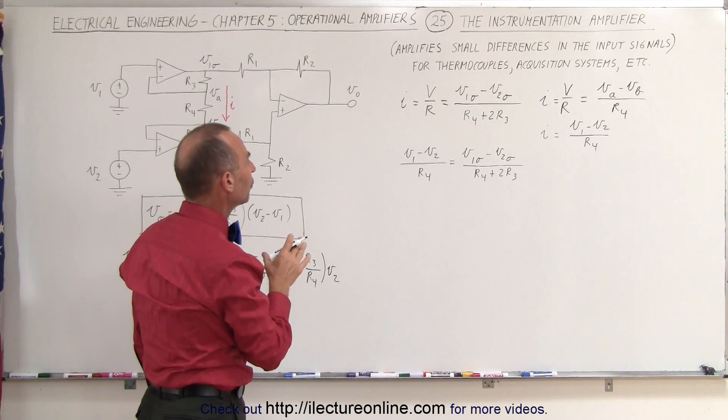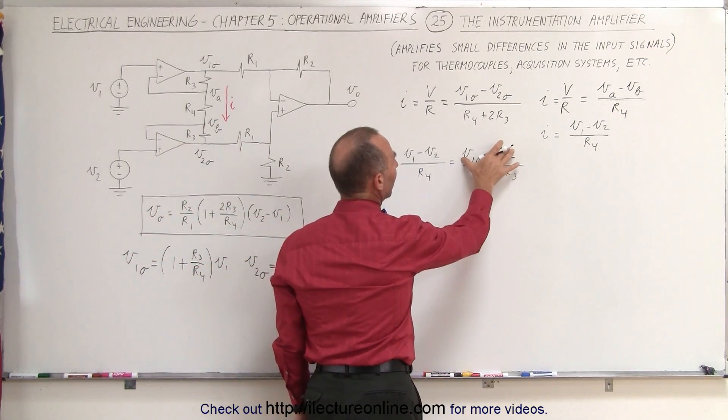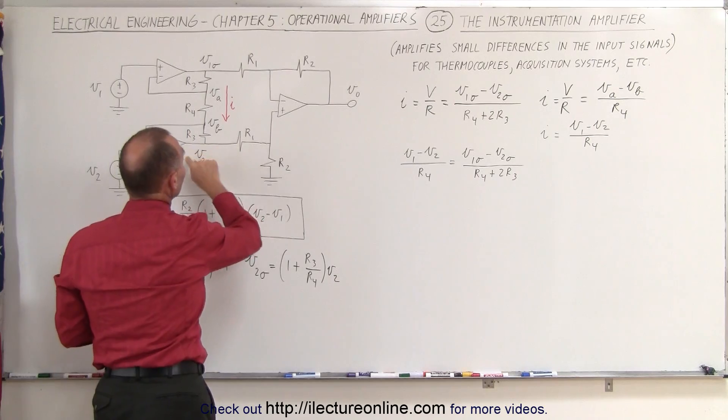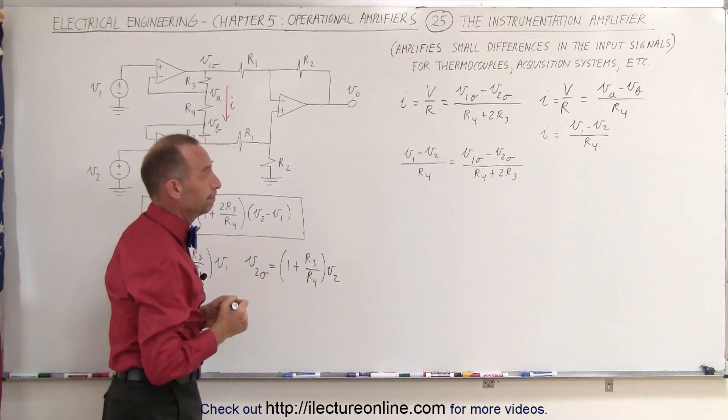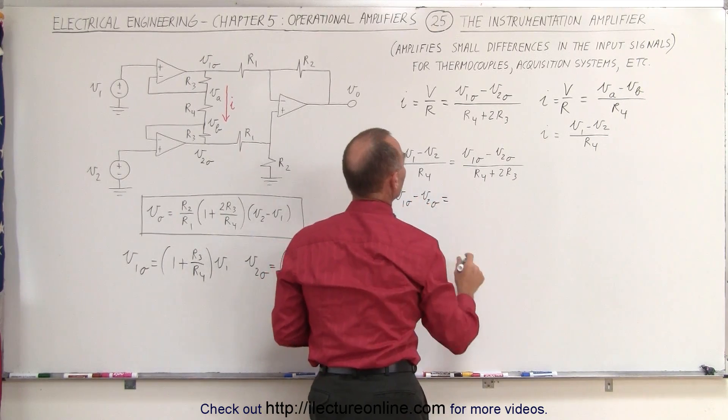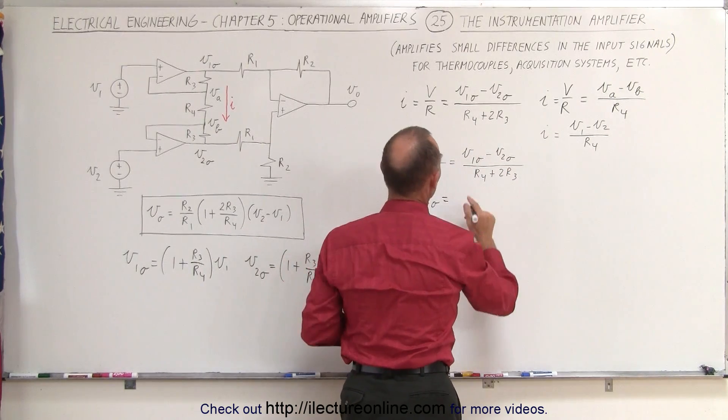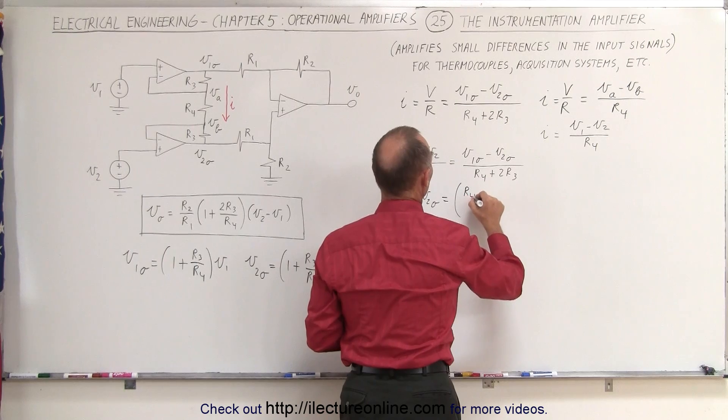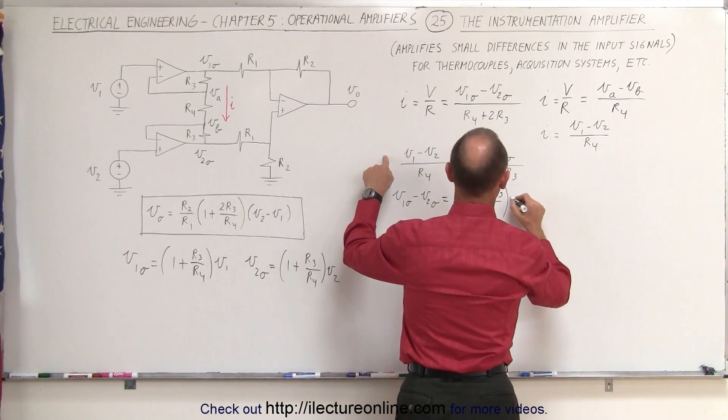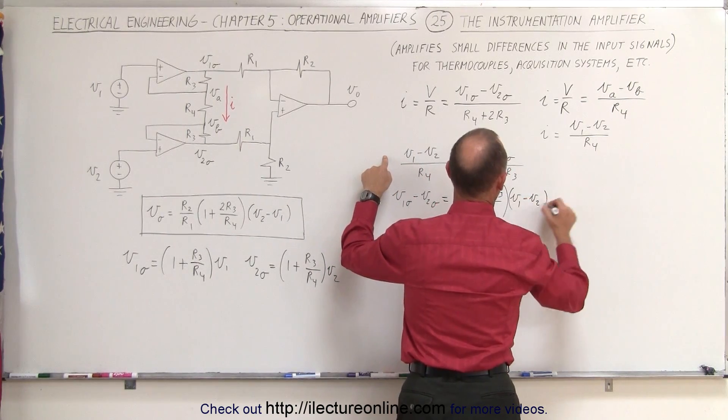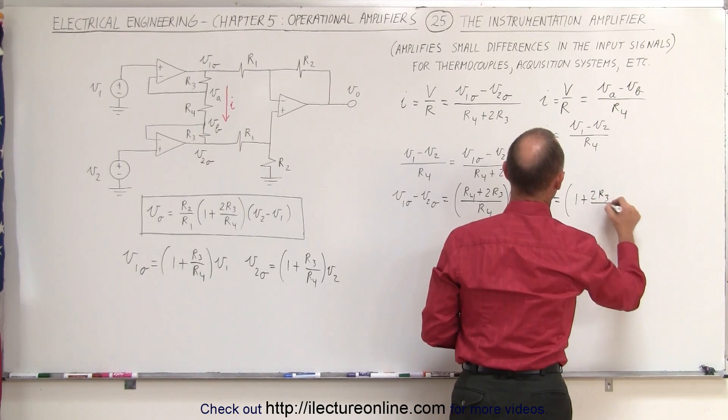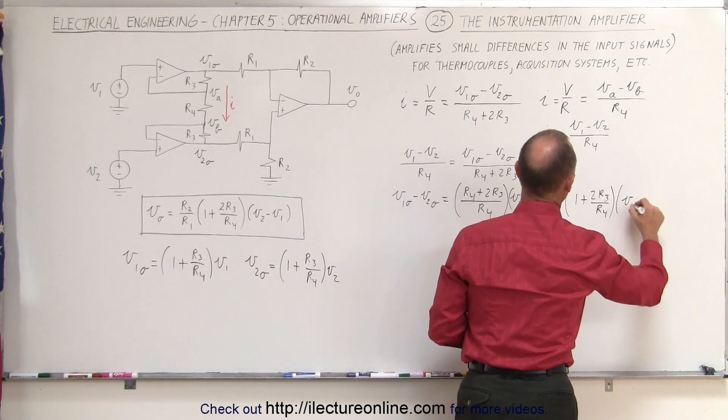Now what we're going to do is we're going to solve for V1 output minus V2 output relative to V1 and V2 because after all V1 output and V2 output are the inputs to the third operational amplifier. So we can write that V1 output minus V2 output is equal to the quantity R4 plus 2R3 divided by R4 multiplied times V1 minus V2. And if we divide this into the numerator, this is equal to the quantity 1 plus 2R3 over R4 times V1 minus V2.